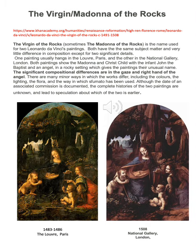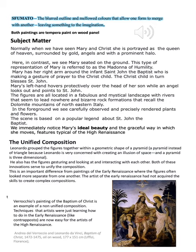Although the date of an associated commission is documented, the complete histories of the two paintings are unknown and lead to speculation as to which of the two is earlier. The presumption, based on documentation regarding the commission, leads experts to believe the painting in the Louvre is earlier than the one in the National Gallery. At the top of the next page we have a definition of Sfumato: the blurred outline and mellowed colours that allow one form to merge with another, leaving something to the imagination — no sharp outlines, everything blends softly. Both paintings are tempera paint on wood panel.